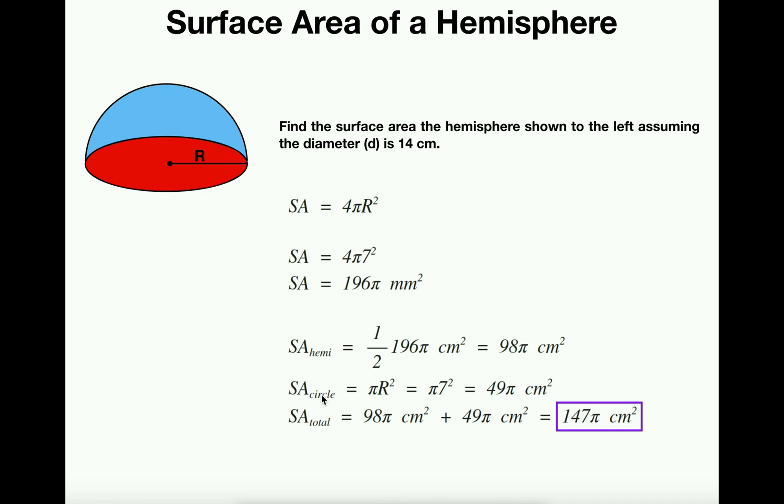So we're going to calculate each of those separately. The first thing I want to do is calculate that of the hemisphere, the top. And remember that for an entire sphere, the surface area is 4πr².